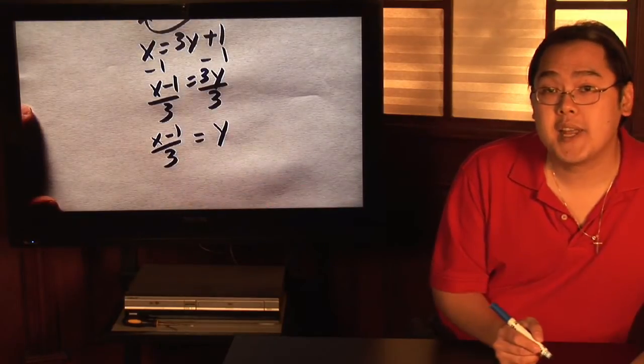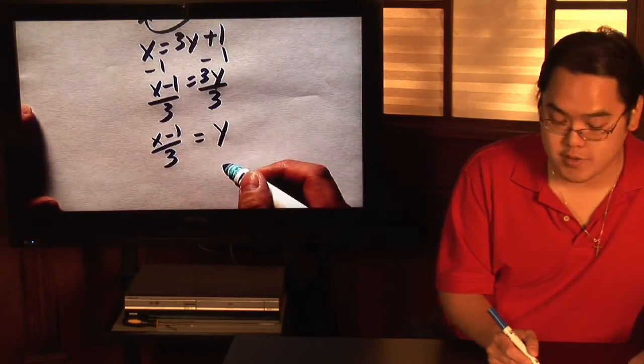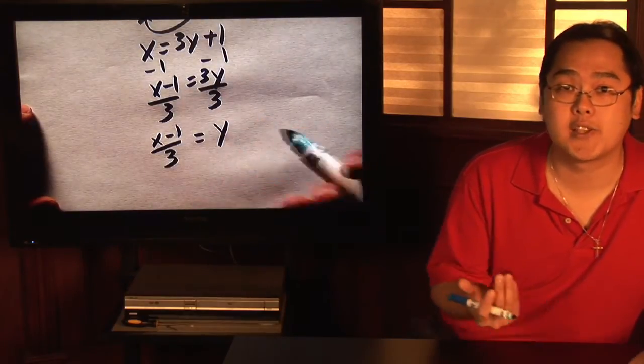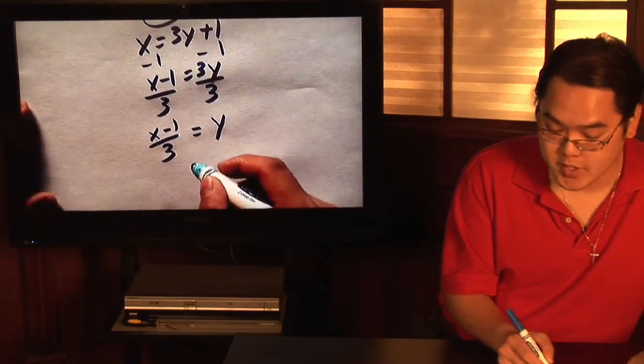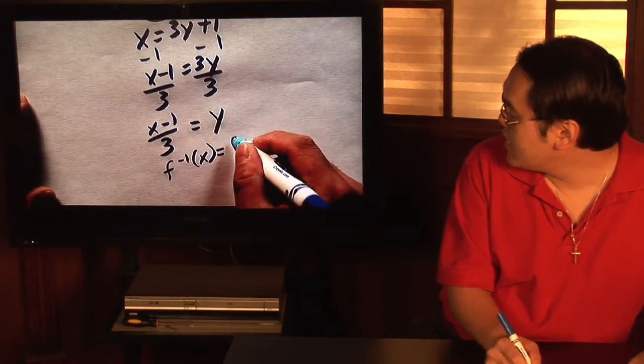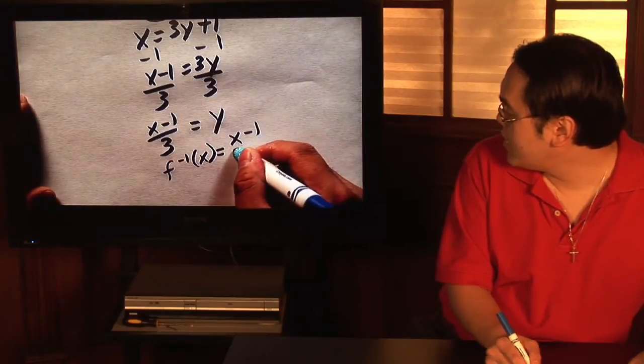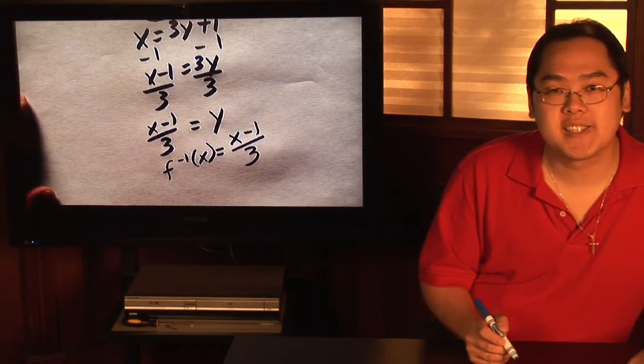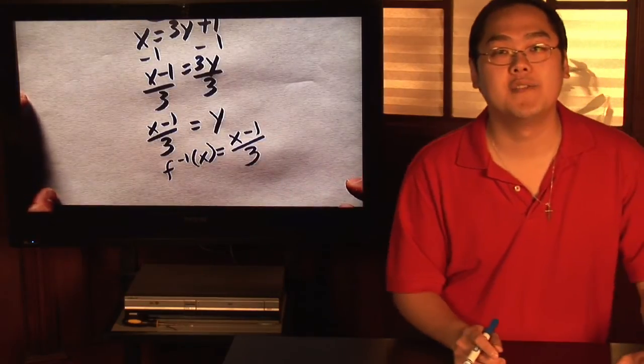And then the last step, replace y with the inverse function. But let me just go ahead and write it so that the inverse function notation is on the left side, since that's what most people are used to seeing. So you have f inverse of x equals x minus 1 over 3. So, I'm Jimmy Chang and that's an example as to how you find the inverse of a function.